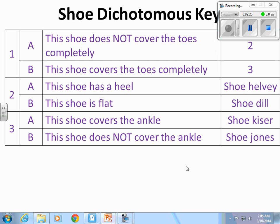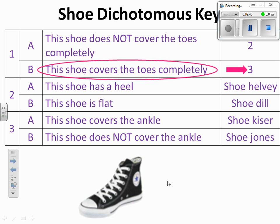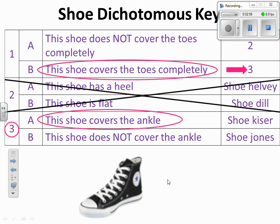I made up a simple one using shoes to start with. We always start with question number one, and one answer is yes — that's the route we follow. This shoe covers the toes completely, so we move on to question number three. This shoe does cover the ankle, so it is called Shoe Kaiser.